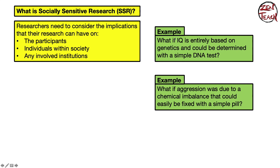Consider two thought experiments. First: what if your IQ could be determined with a DNA test from birth? Imagine how that would change society. Second: what if aggression was due to a chemical imbalance that could be fixed with a simple pill? If we could identify who is more inclined to aggression and fix it with a pill, would you force the pill on them?